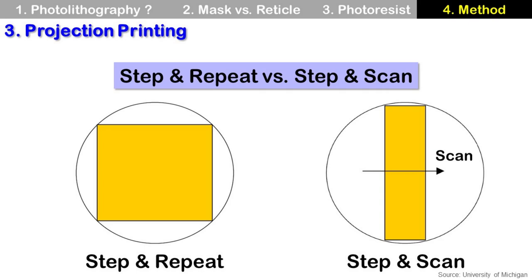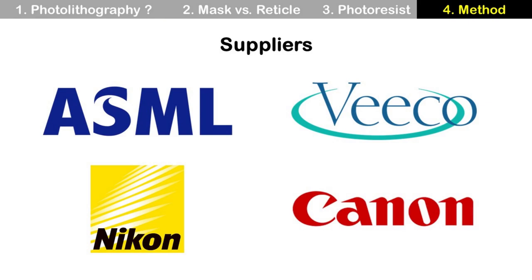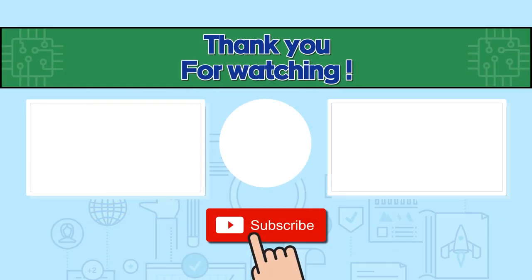This is a simple comparison between step-and-repeat and step-and-scan for better understanding. Photolithography machine suppliers are ASML, Bico (previously UltraTech), Nikon, and Canon. Thanks for watching and have a nice day.